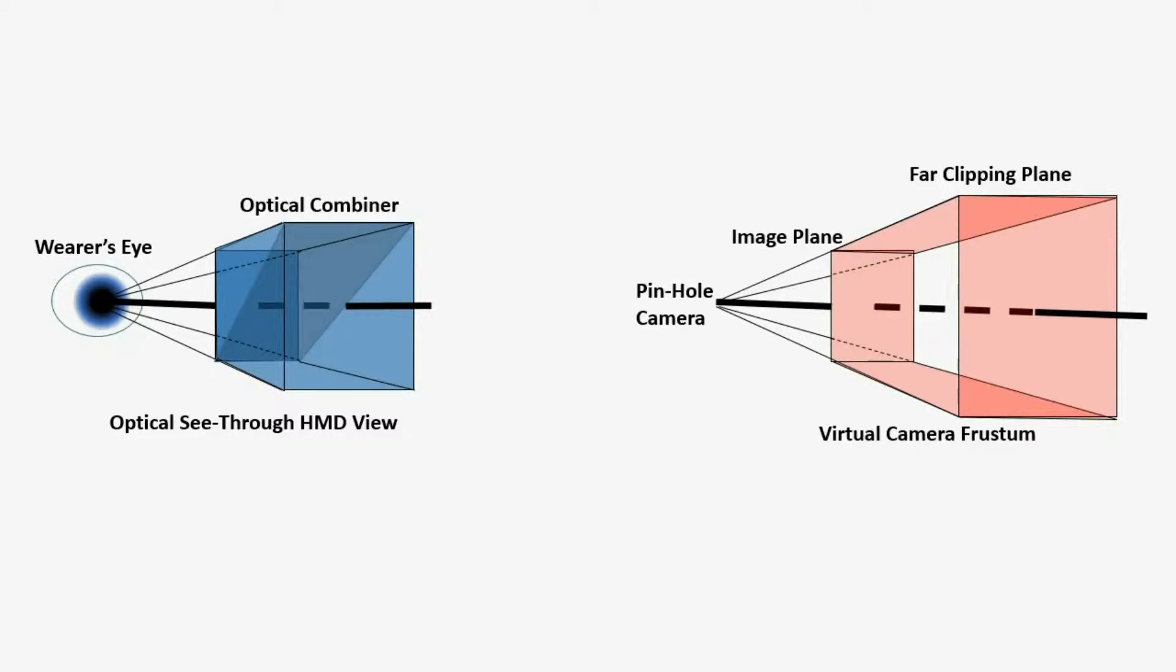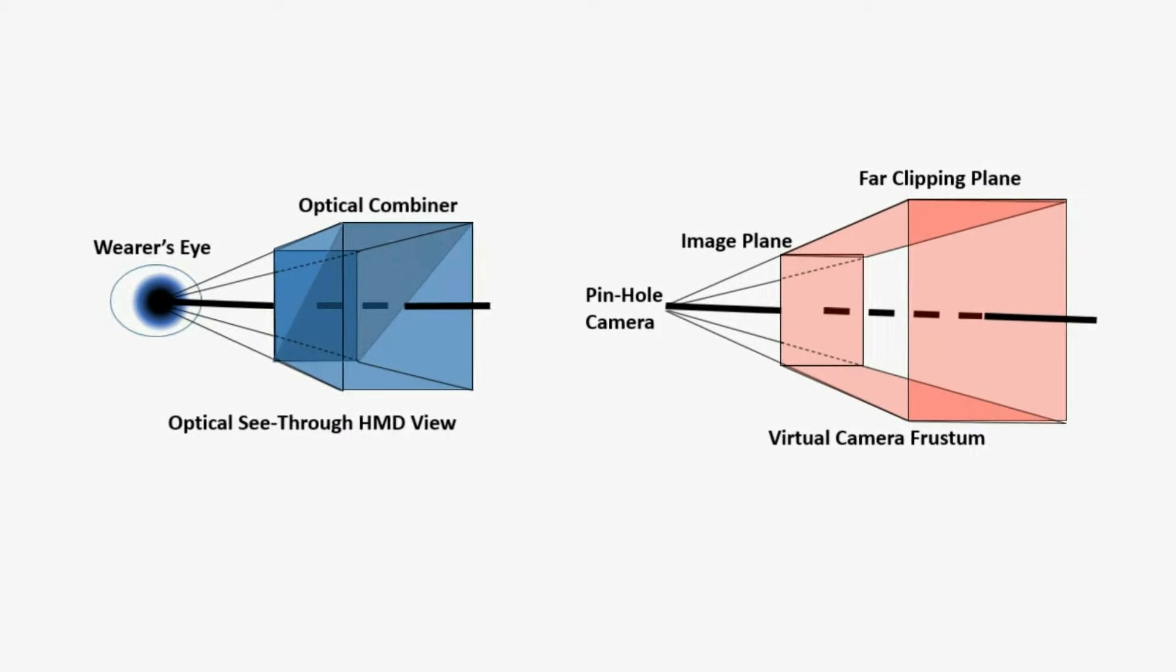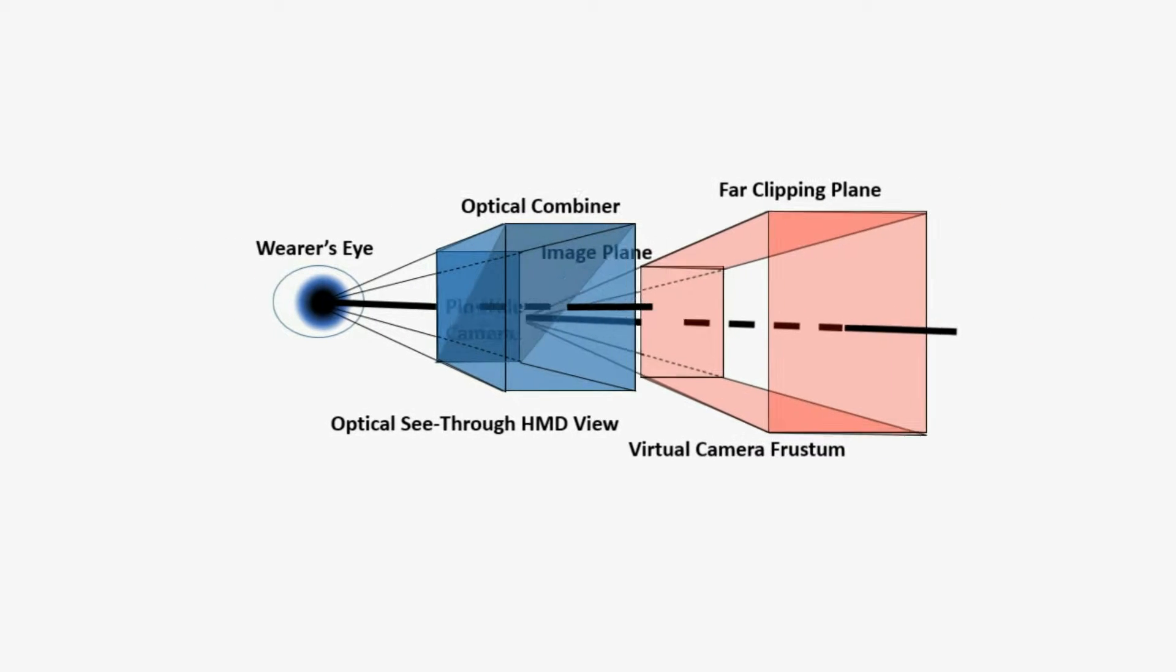The visual system formed by the user's eye and the display's optical components is analogous to the virtual camera system used to render computer-generated geometry in many modern graphics pipelines. The process of calibration seeks to closely match the parameters of the virtual camera to those of the eye display system.